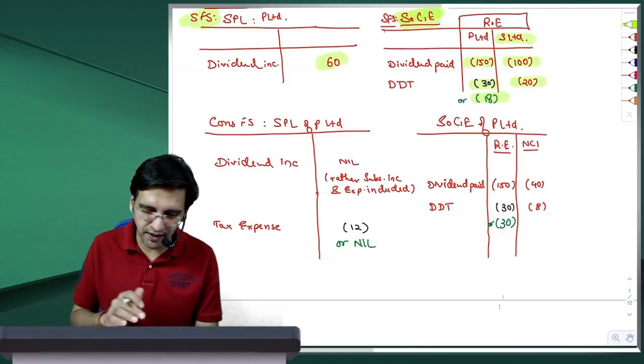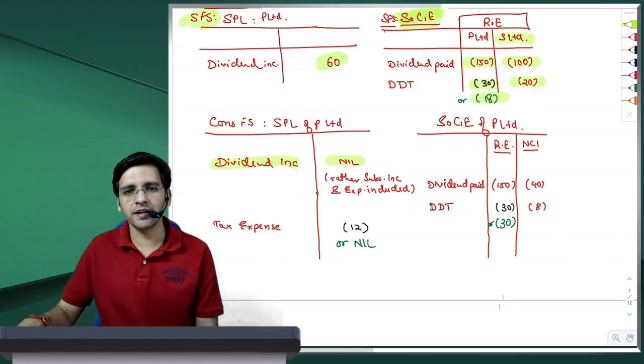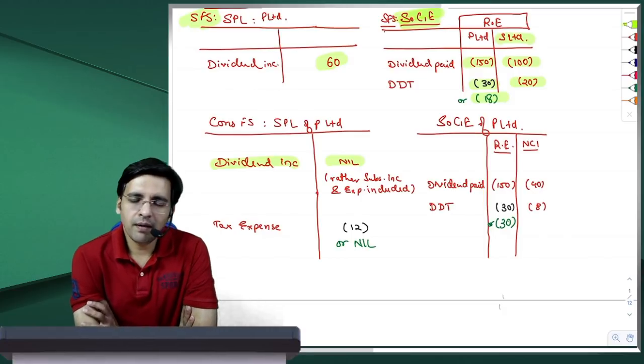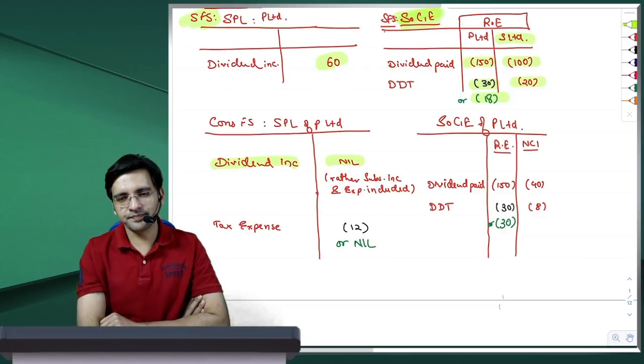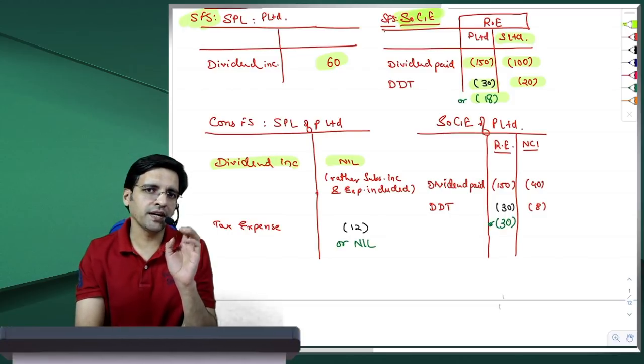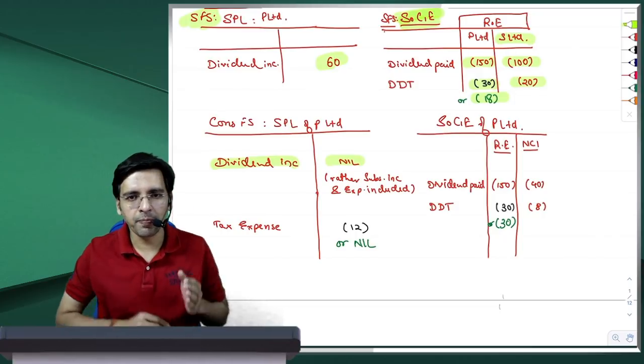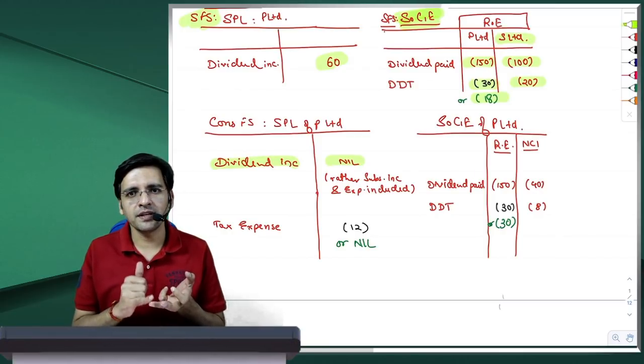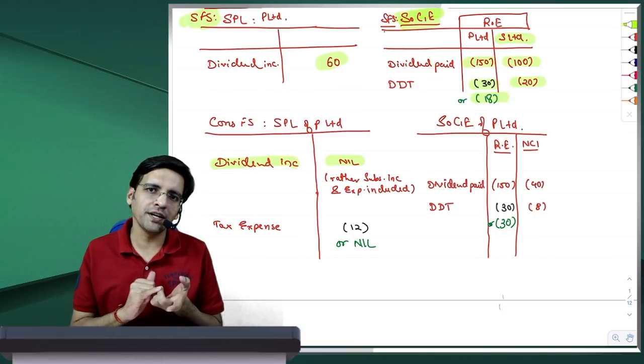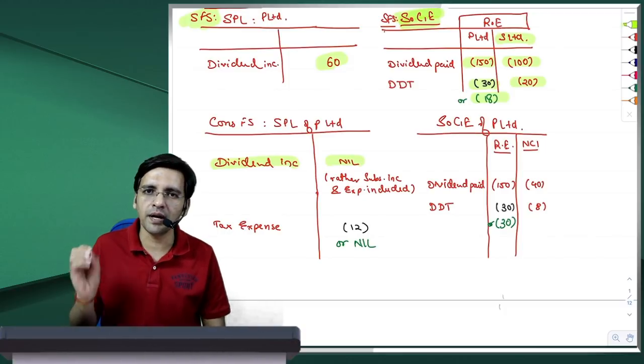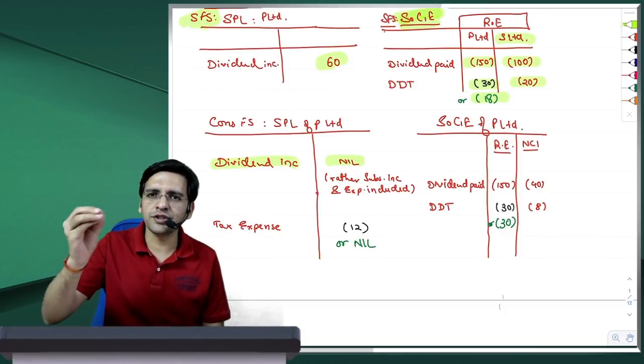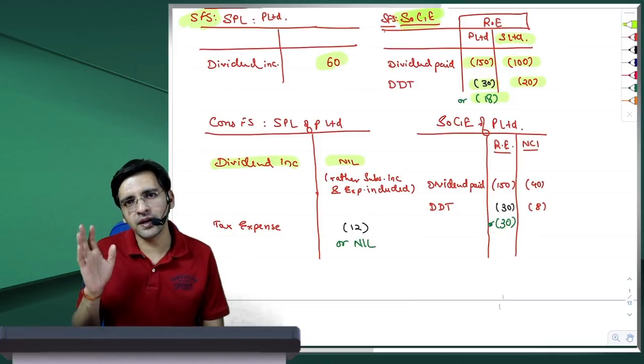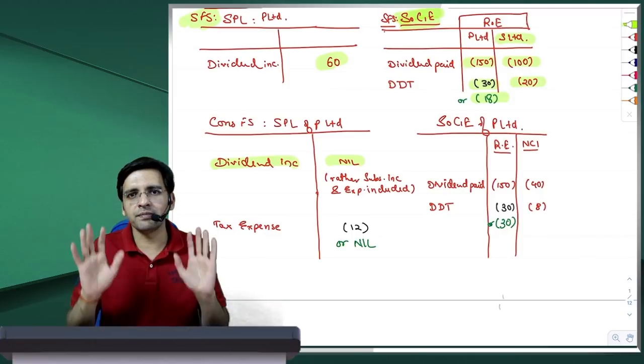Aapse do situation mein poochna hai: pehla jab parent ko credit available hai, dusra jab credit available nahi hai. Separate financial statement mein, dounohi case me, dividend income parent apni books me dikhayega. Subsidiary dikhayega 100 ka dividend or 20 ka tax. Parent 150 ka dividend aur jitna bhi tax usko pay karna padehai - credit mila hai toh 18, nahi toh 30. Yahaan tak aapki kaahni simple hai.